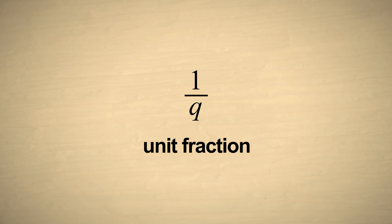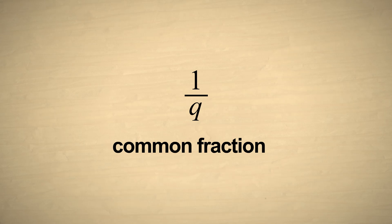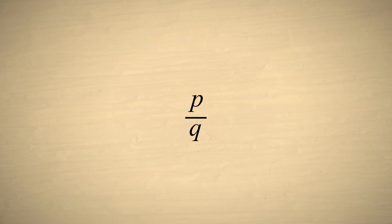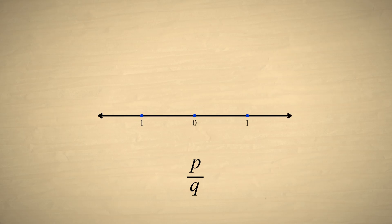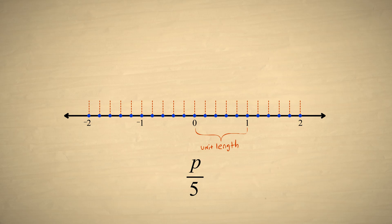Eventually, unit fractions were replaced with common fractions. The numerator of a common fraction can be any integer, which we will represent by the letter p. When representing the value of a fraction on the number line, the denominator specifies how many equal parts each unit length is subdivided into, and the numerator specifies the number of those subdivisions in the fraction.